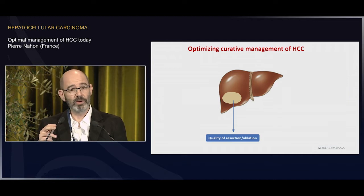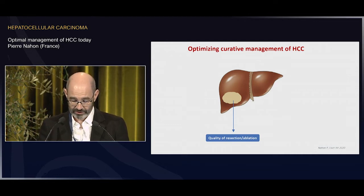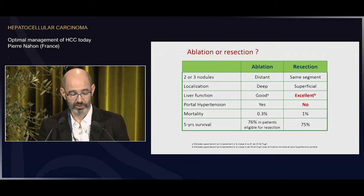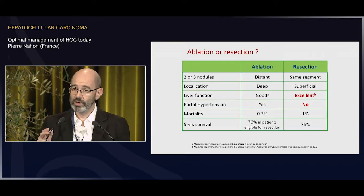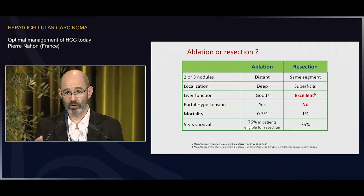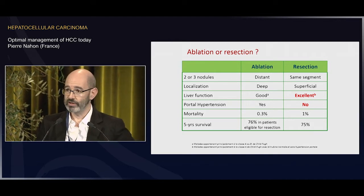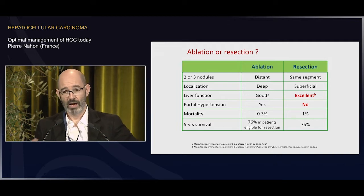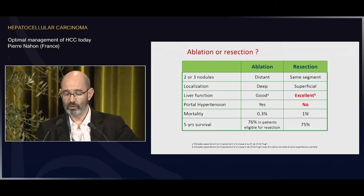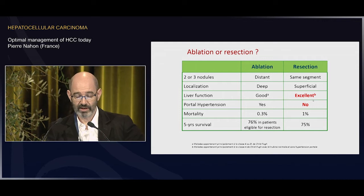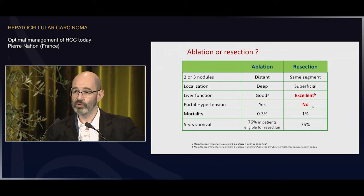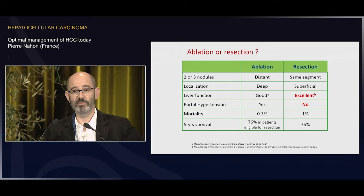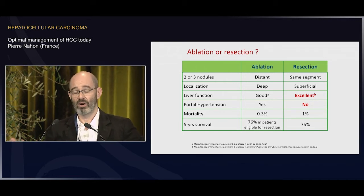How can we improve the prognosis for patients using more sophisticated surgical and ablation procedures? In your everyday practice, every week, you discuss with colleagues in the multidisciplinary board which patient can be eligible for resection or ablation. This will depend upon the size and localization of the tumor. For surgery, you will aim at identifying patients with the most favorable safety profile — excellent liver function and no portal hypertension — using scoring systems such as Child-Pugh, MELD score, or ALBI score.